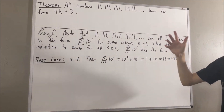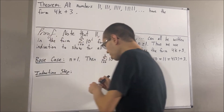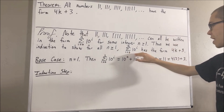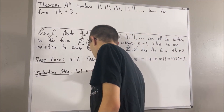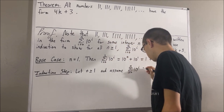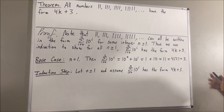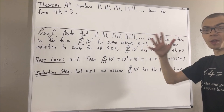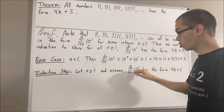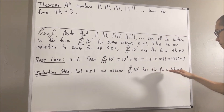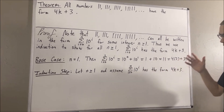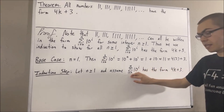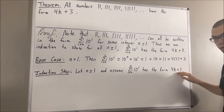Now let's move on to the induction step. In the induction step, we give ourselves an arbitrary integer n greater than or equal to 1, and we assume that this is true. The whole goal of the induction step is to show that this is also true for n plus 1. That is, we want to show that the sum from i equals 0 to n plus 1 of 10 to the power of i has the form 4k plus 3. Since we know that the sum up to n has the form 4k plus 3, this means it is equal to 4k plus 3 for some integer k.